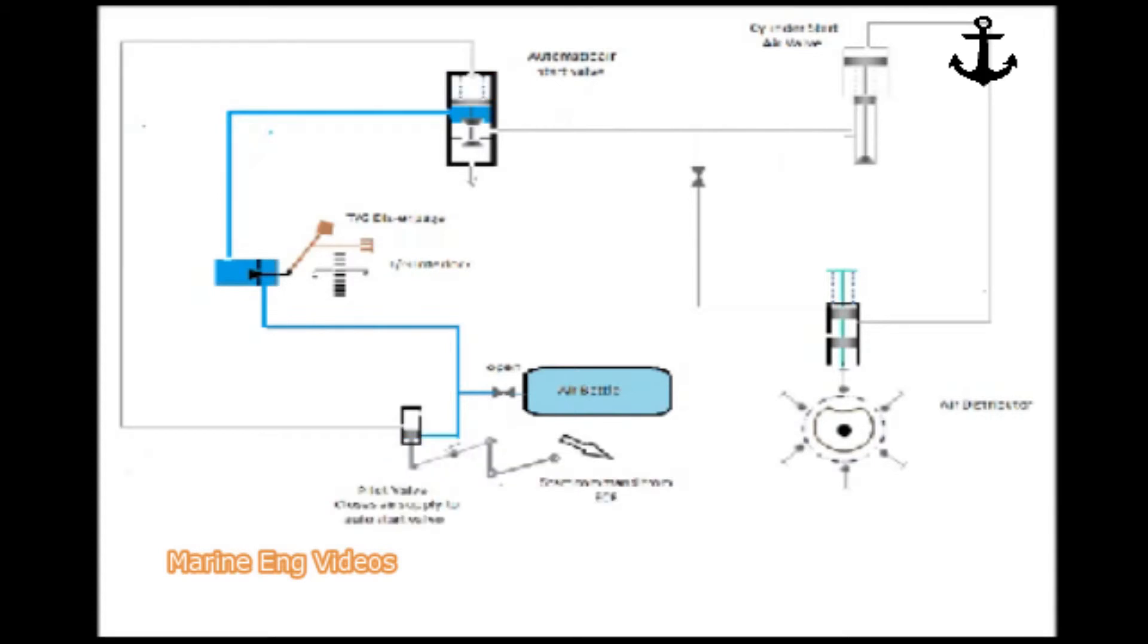When the air start lever is operated in the engine control room, the pilot valve shifts and blocks the air on top of the automatic valve. This vents the line and there is no more positive closing.